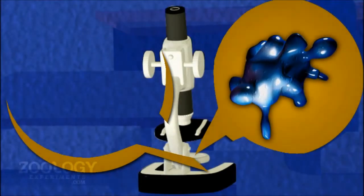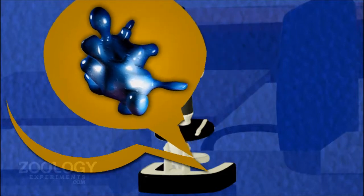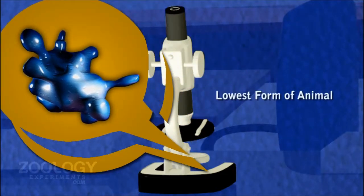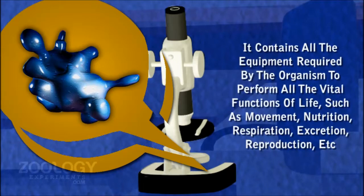Amoeba is the most suitable free-living available protozoan. It is regarded as the lowest form of animal as its body consists of a simple fleck of protoplasm. The cellular body performs all the vital functions of life such as movement, nutrition, respiration, excretion, reproduction, etc.